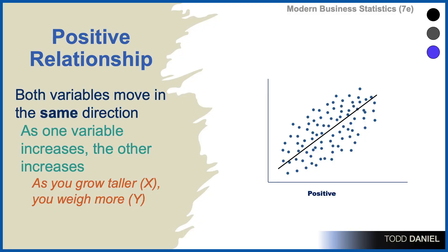In a positive relationship, both variables move in the same direction. As one variable increases, the other variable also increases. For instance, as you grow taller, you tend to weigh more.